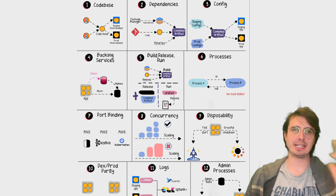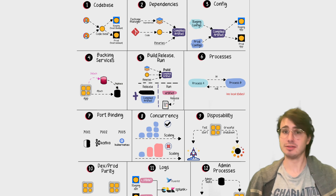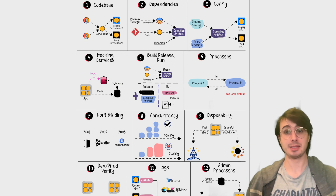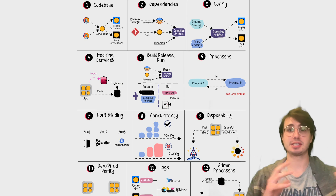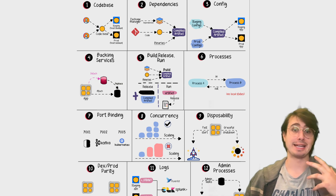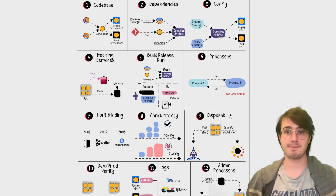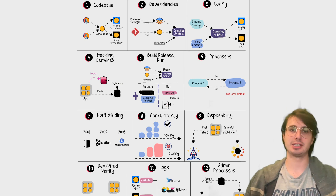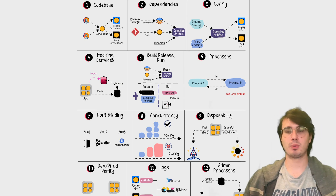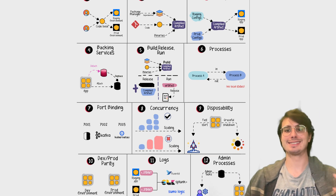Before I start talking about what these individual best practices are and how you can actually implement them, I want to first discuss why the 12-factor methodology emerged. The core philosophy is that it really aims to minimize the time and costs for new developers to join a project and start being effective. It also offers maximum portability between execution environments, meaning that if I run code in my dev environment, it's going to run the same in prod. It's designed to be cloud-native and has a goal of minimizing divergence between development and production, allowing you to scale up without significant changes to tooling, architecture, or development practices so that as you're growing, your application is growing with you.